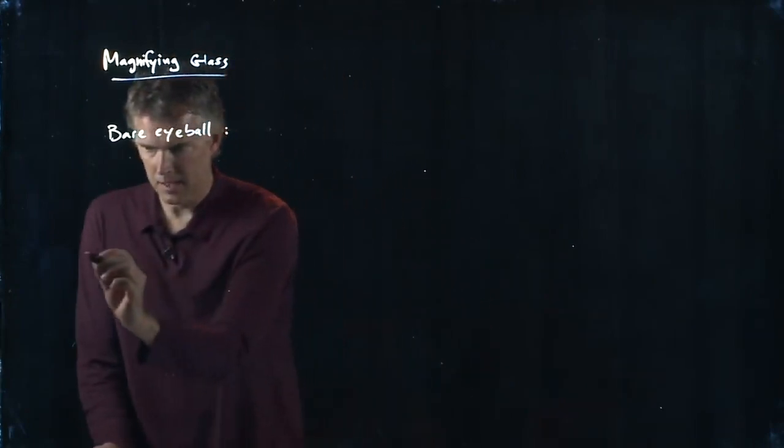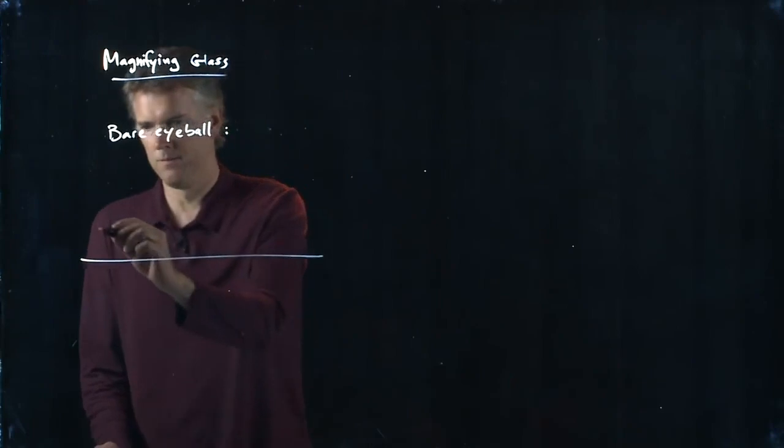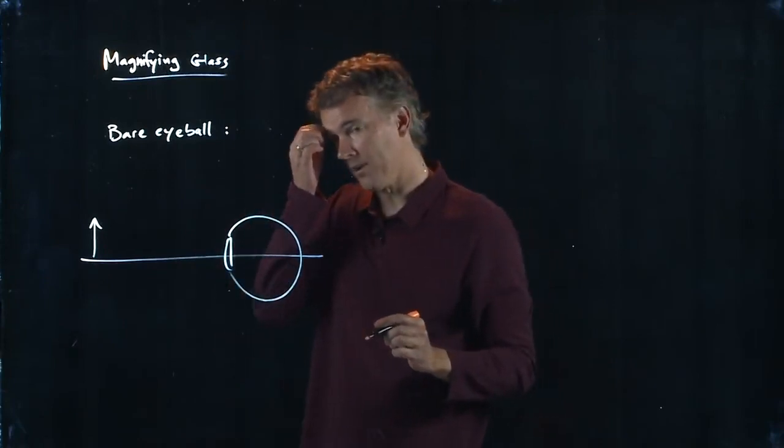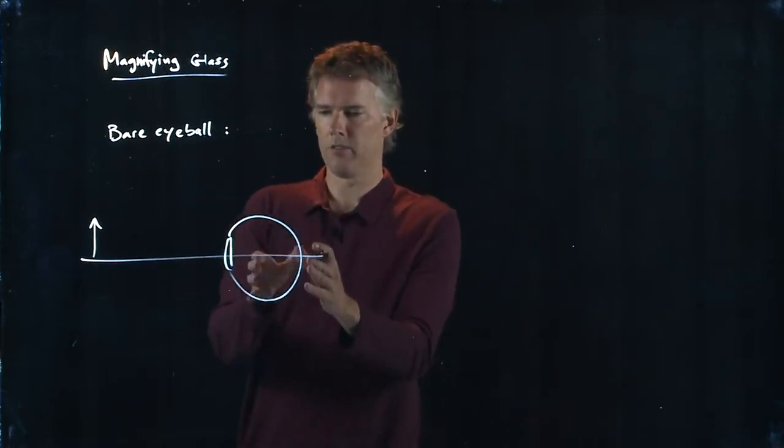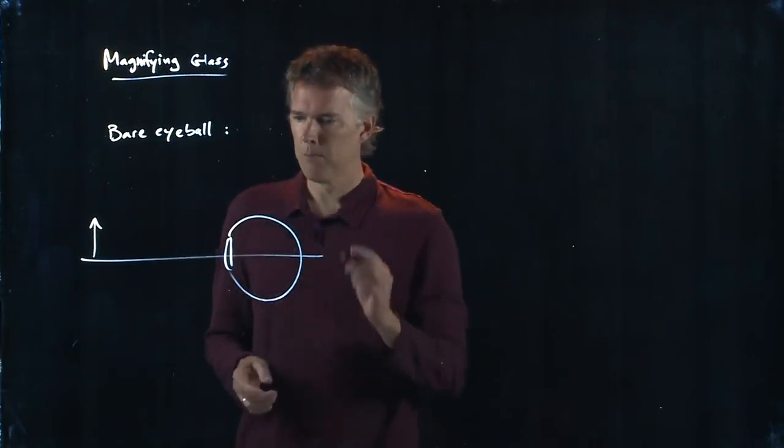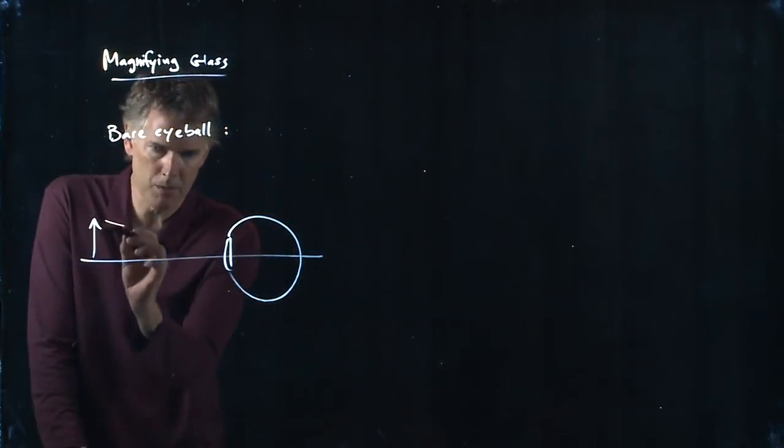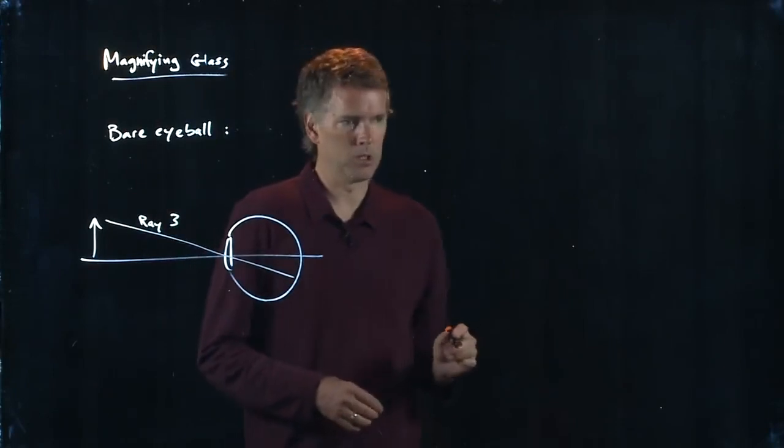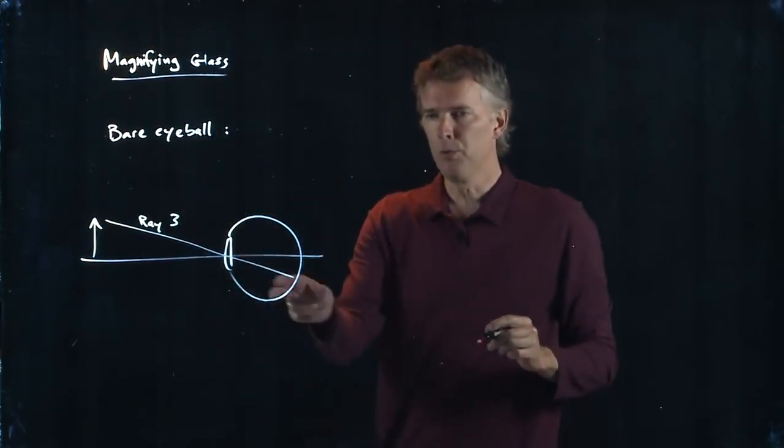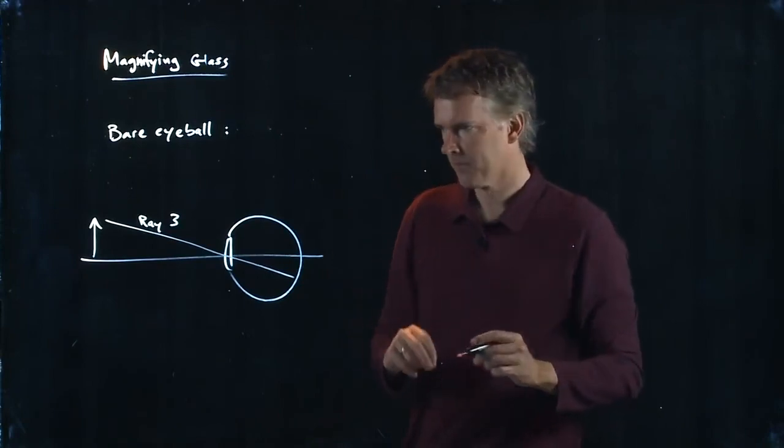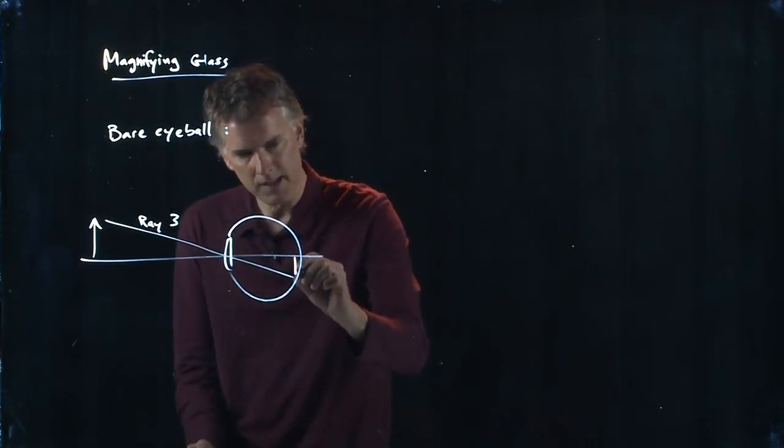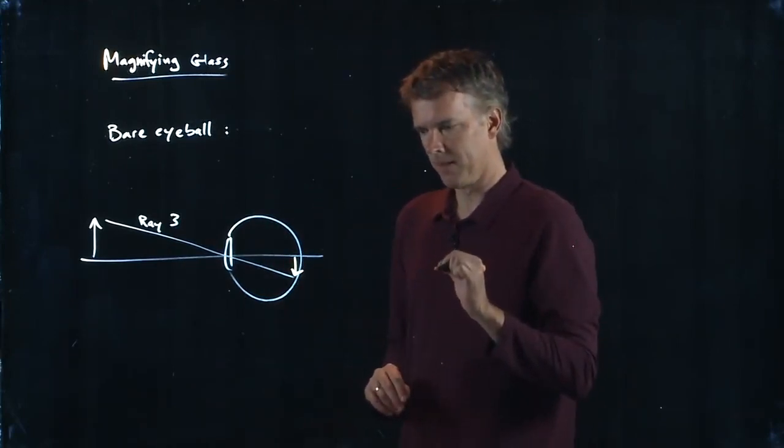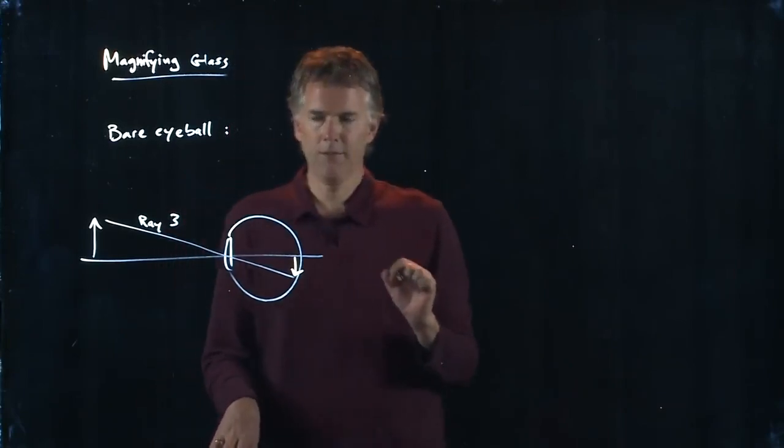Let's take a look at an object. Here's my eyeball, there's the object. I can follow the various lens rules, but really the only one that I need is ray 3. Ray 3, according to our lens rules, is go through the center of the lens and it doesn't bend. So that one went through the center of the lens, it didn't bend. The image is therefore going to be that big.